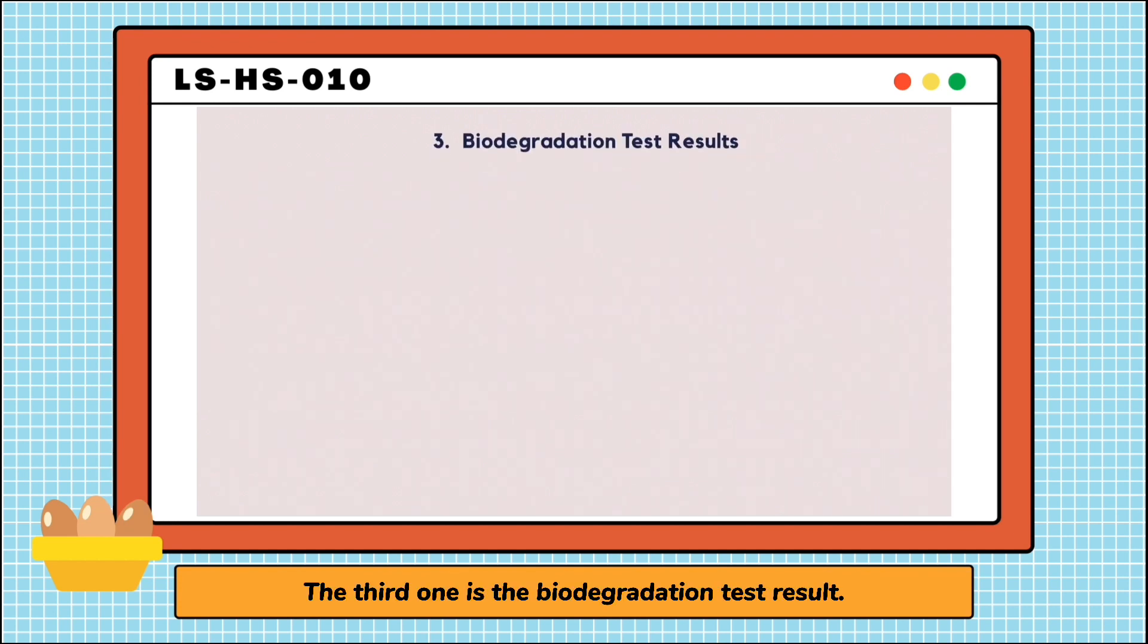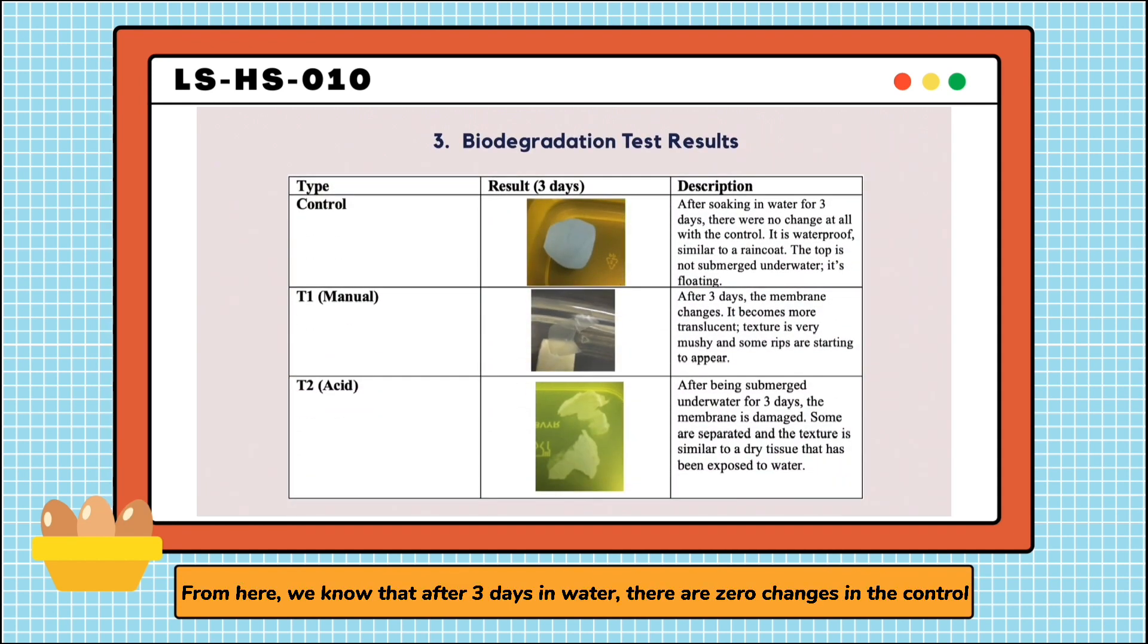The third one is biodegradation test result. From here, we know that after three days in water, there are zero changes in the control, whereas in T1 and T2, there are obvious damage to them, such as rips appearing, and also the texture becomes more fragile.